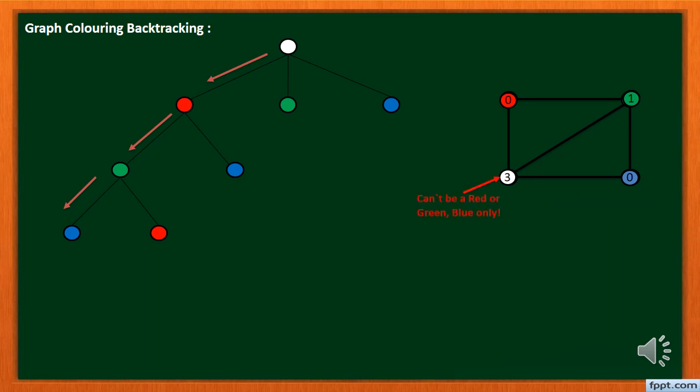But the blue color is not safe for this node because we cannot give red color to node 3. That's why we have to perform backtracking, and give red color to node 2 and then give blue color to node 3.